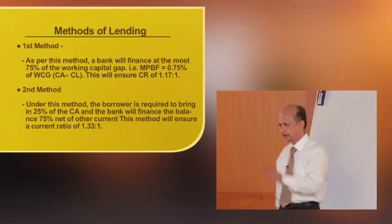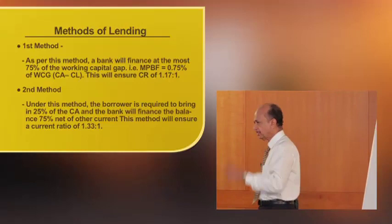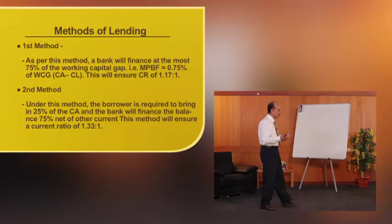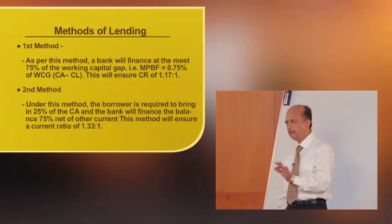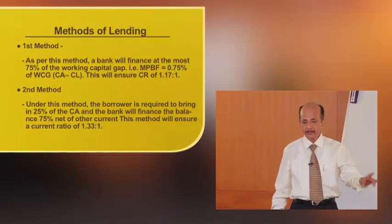For our purposes, we need to understand what is the first method. Under the first method, we first ascertain the working capital gap — that is, current assets minus current liabilities other than bank borrowing. The unit is required to bring in a minimum of twenty-five percent of the working capital gap, and the balance amount can be financed by the bank.